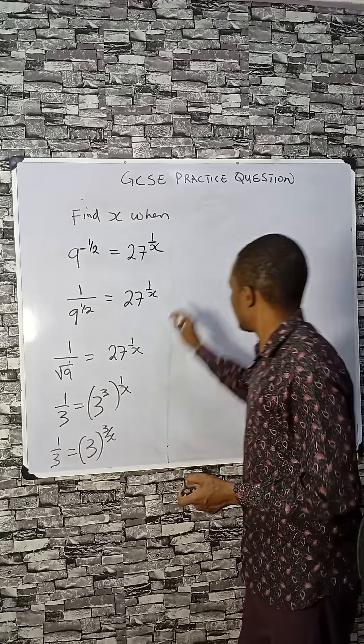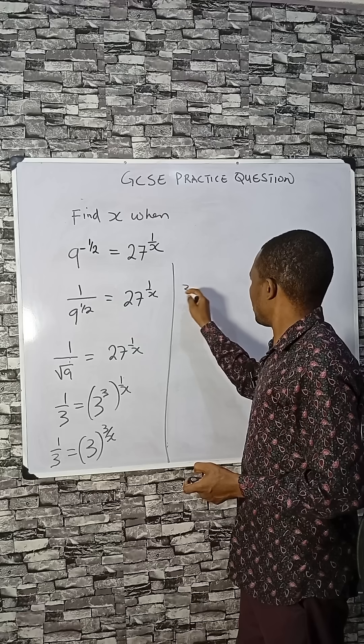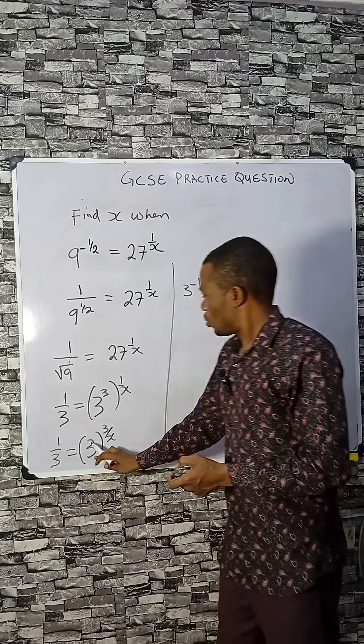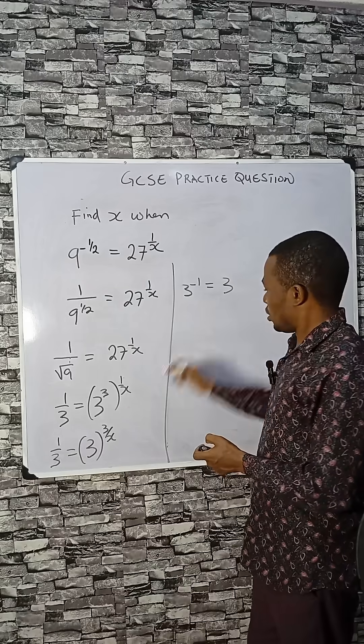If we can do something here, this is 3 raised to the power minus 1 equals to 3 raised to the power of 3 divided by x.